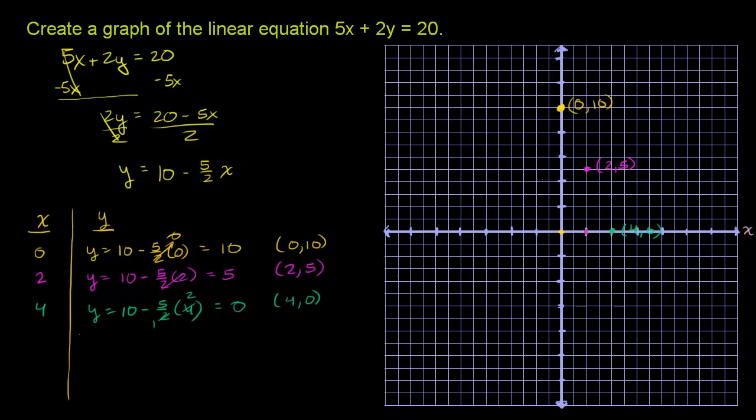So let me just draw it. So I'll do it in white. So the line will look something like this. The line will look something like that. And I could keep going in both directions. So there you have it. That is the graph of our linear equation. Let me make my line a little bit bolder. And I think you get the general idea.